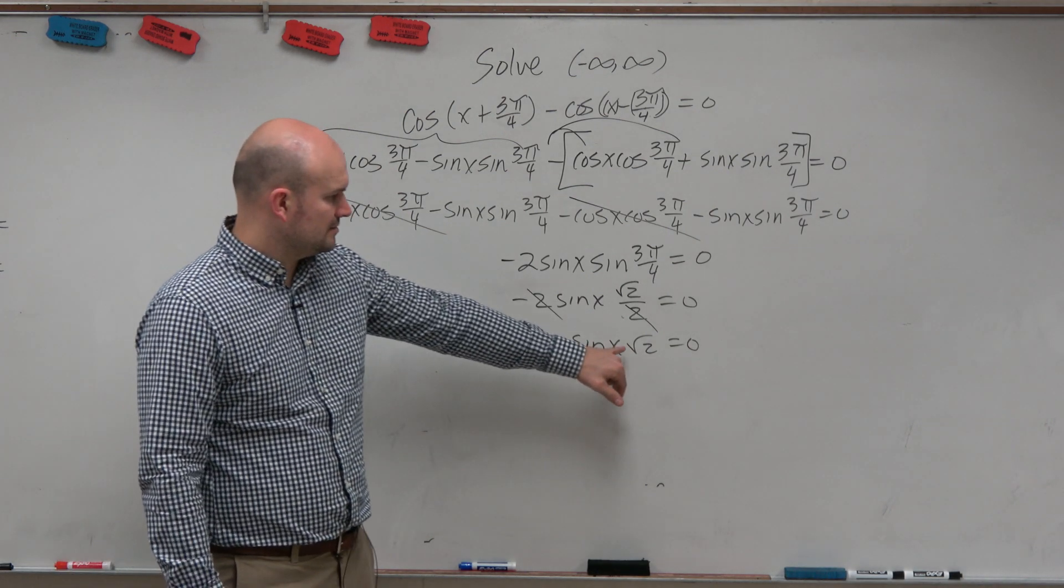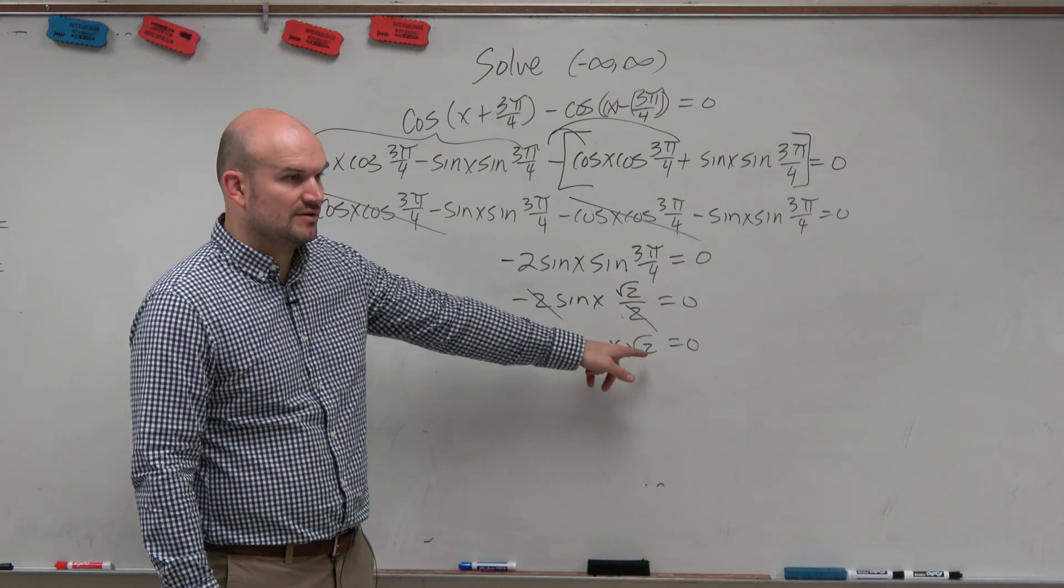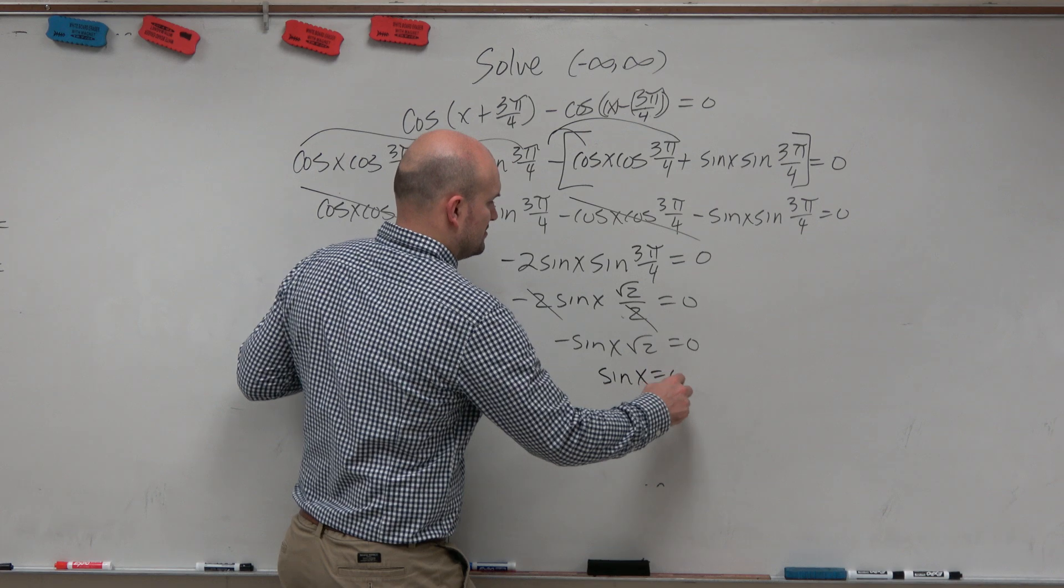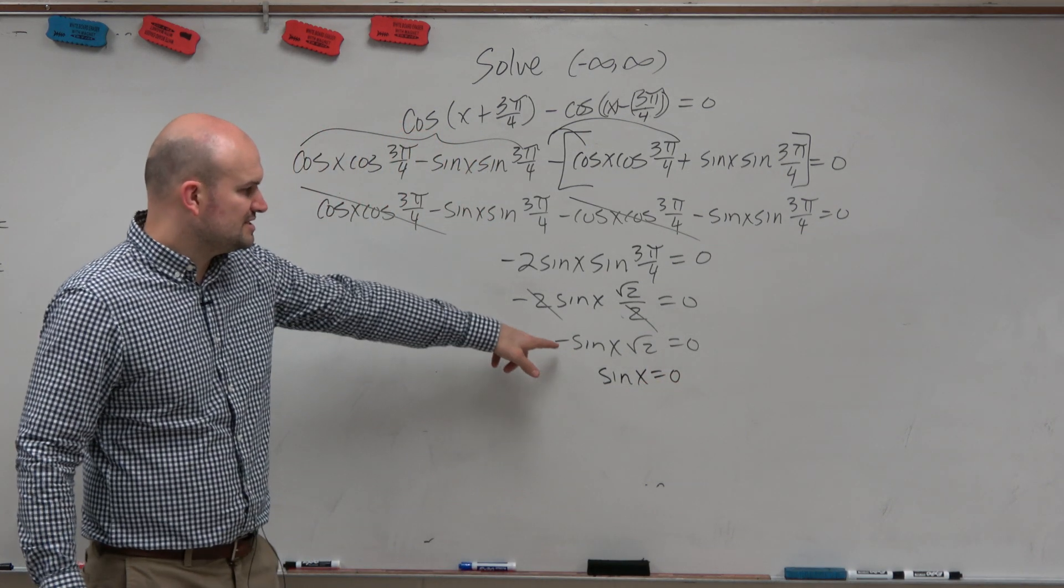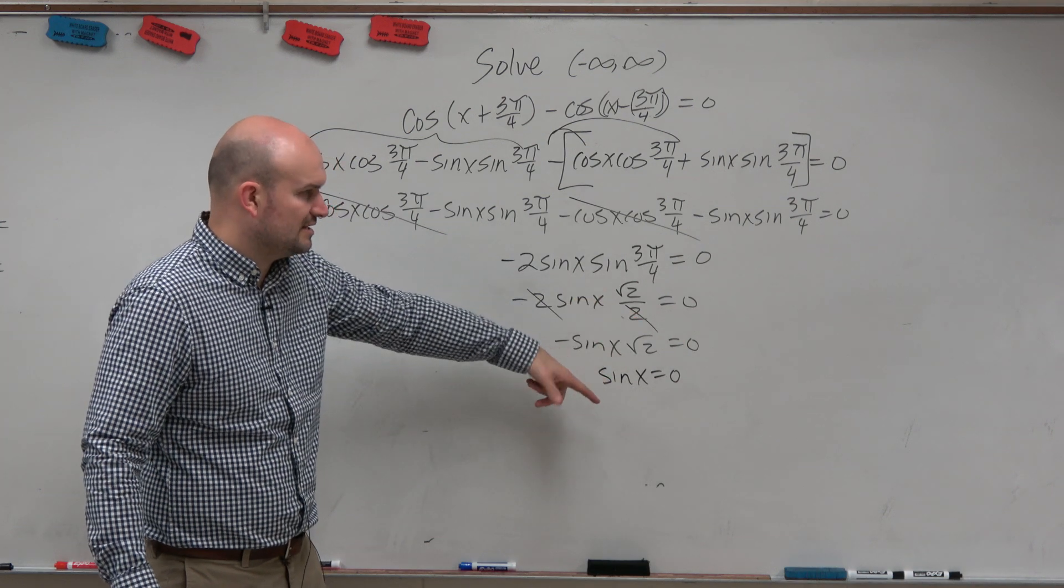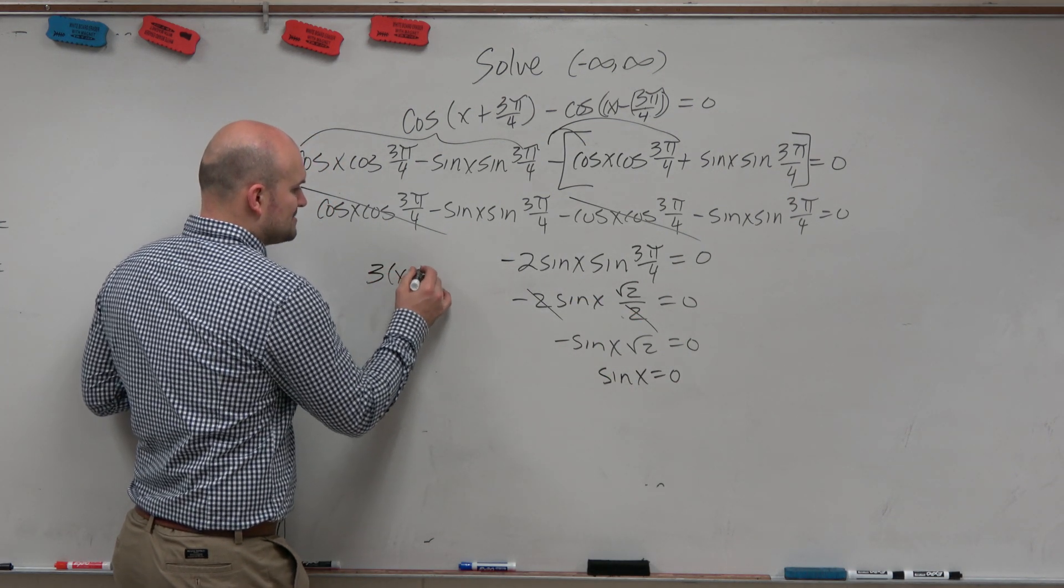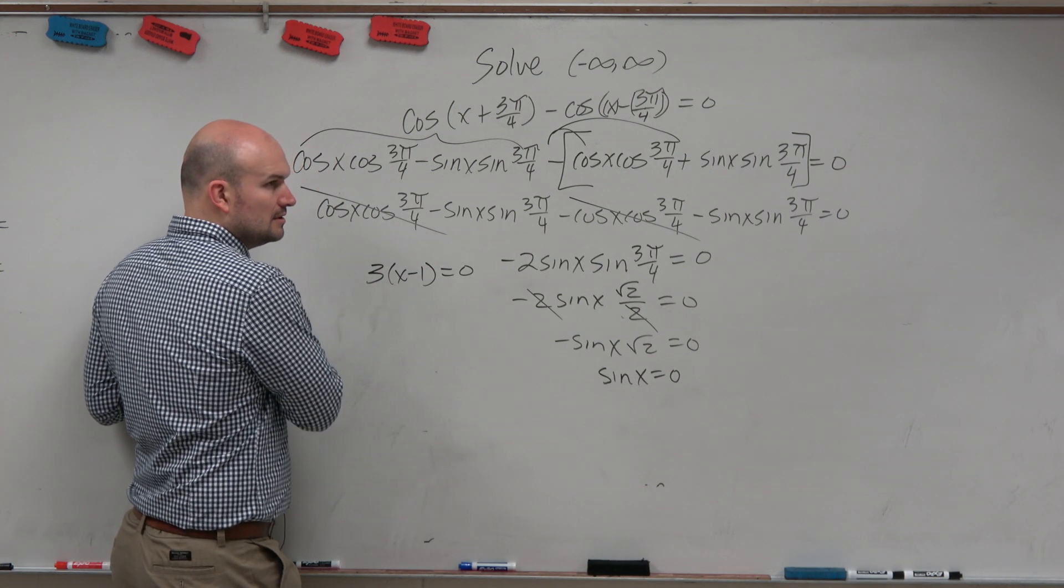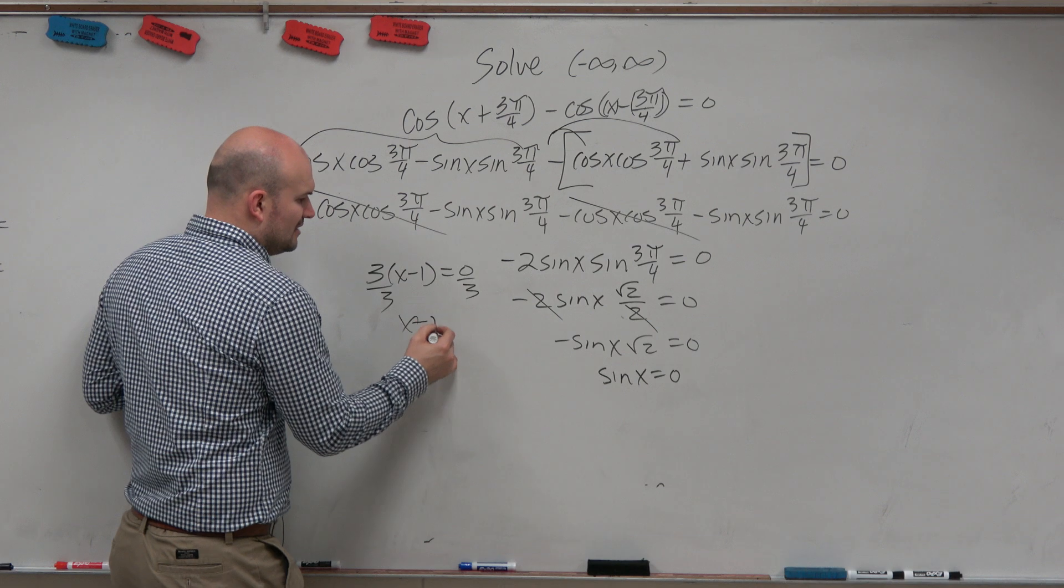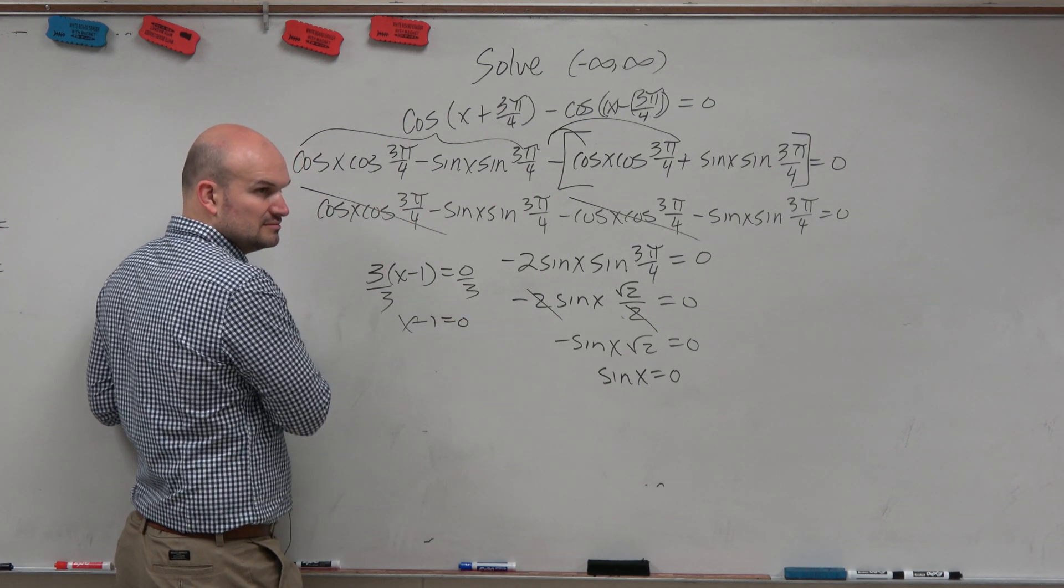Do we need to even include, like, this is a product, right? Could I just divide out the square root and the negative? Is this really just the same thing as sine of x equals 0? Because you just divide by negative 1 and negative square root of 2 on both sides. It's like having 3 times x minus 1 equals 0. What are the solutions here? Just divide out the 3. It's still x minus 1 equals 0. The 3 is just an extra, it's a scalar.